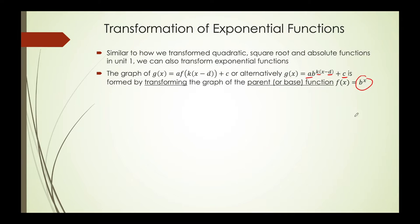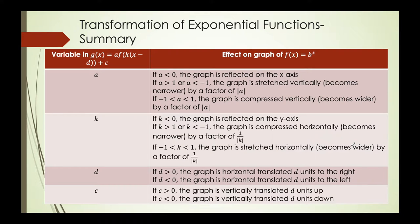The variables a, k, c, and d will transform our parent function in the same way that they did for parabolas, square roots, and absolute value functions. So as long as you remember how the graph is changed by those variables, it works the exact same way here. This table summarizes the four variables and the effect that each has on the base function.